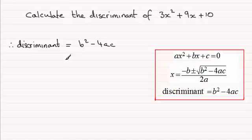So it's just going to be equal to b², that'll be 9², minus 4 times a which is 3 times c which is 10.